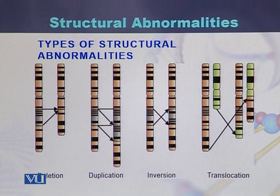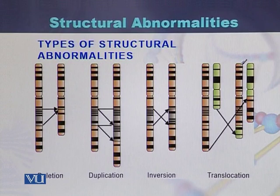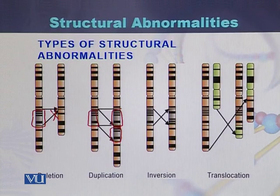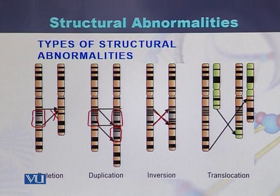Looking at the types of structural abnormalities — deletion, duplication, inversion, and translocation — in the case of deletion, a fragment of the chromosome has been deleted. In the case of duplication, a fragment has been duplicated, appearing a second time. In the case of inversion, the fragments are rearranged within the same chromosome.